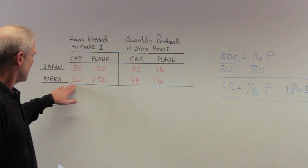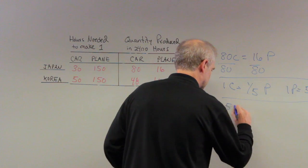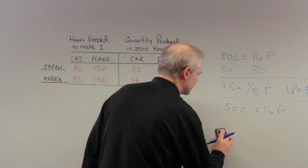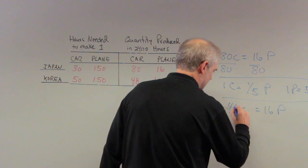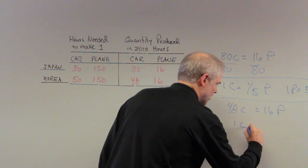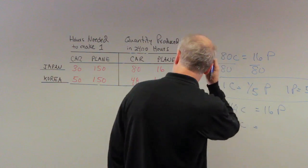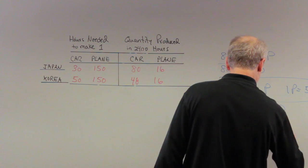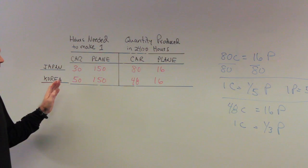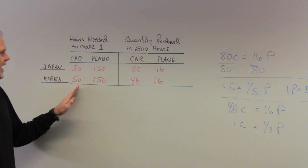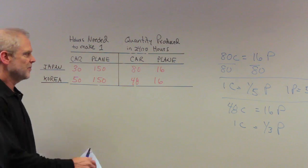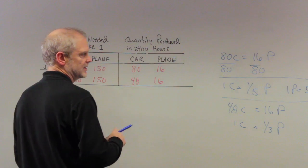How about Korea? Well, Korea can produce 48 cars, which is equal to also 16 planes. Excuse me, I knew the numbers had to work out better than that. 48 cars to 16 planes. We divide both sides by 48. We end up with one car is equal to 16 divided by 48, or one third of a plane. So this is Korea's opportunity cost. They can have 48 cars or 16 planes, and Japan can have 80 cars or 16 planes.